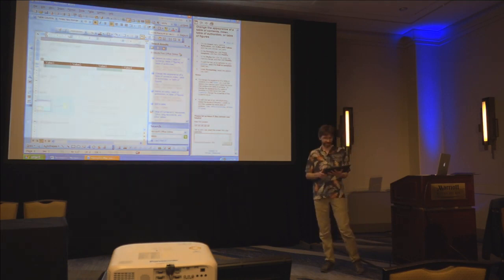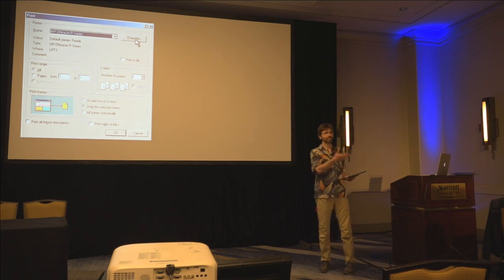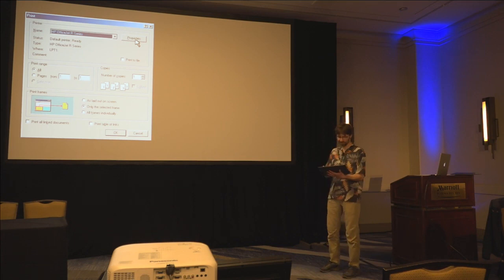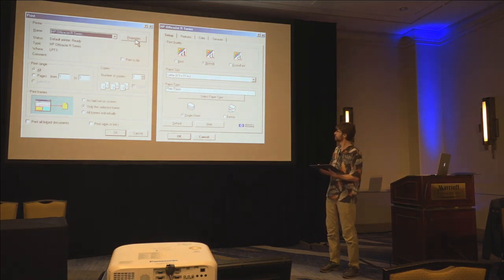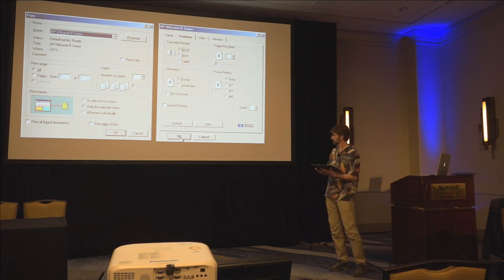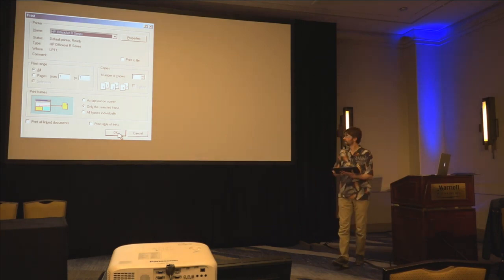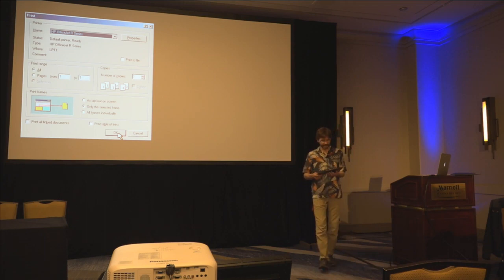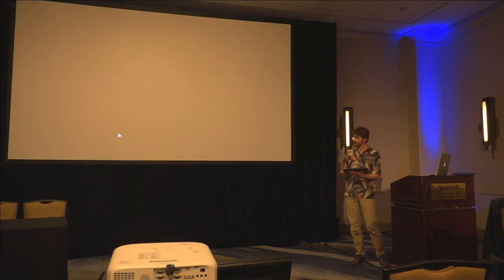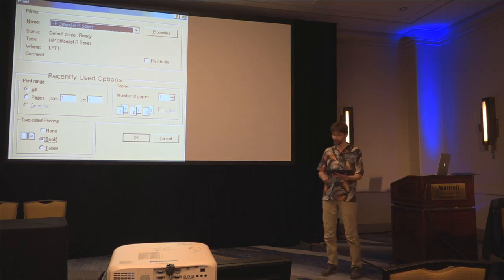One thing that particularly bothered Dan was that printing required just too much effort. Dan, being from Seattle and an environmentalist, always printed duplex to save paper. At the time, it required an unreasonable number of steps: click Properties, click Features, select binding type, click OK, then click another OK. He described a future world in which software could recognize that we all have slightly different ways of using it and maybe adapt itself to each user.